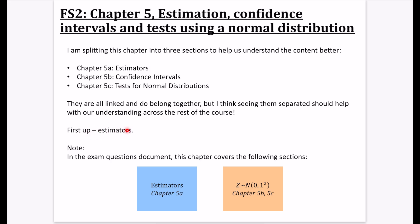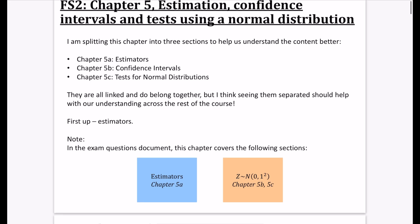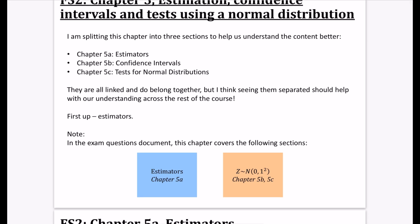When you look at my exam question document that has sorted all the questions into different topics, this chapter covers two sections: estimators (5A), and then 5B and 5C are things to do with normal distribution tests. I'm using Z here - Z gets used for the standard normal distribution with mean zero and standard deviation one.